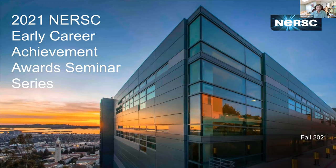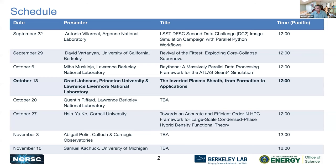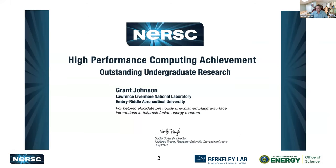Welcome to the next in our series of seminars from the NERSC 21 Early Career Achievement Award Series. We started these series of awards to recognize outstanding work done by young researchers using NERSC and give them an opportunity to share what they've done. Today we have Grant Johnson from Princeton University and Livermore National Lab. We are recognizing your achievement for helping elucidate previously unexplained plasma surface interactions in tokamak fusion energy reactors. Congratulations, and if you could just give me a mailing address, we'll send you a physical copy of this certificate.